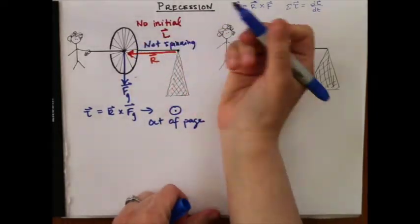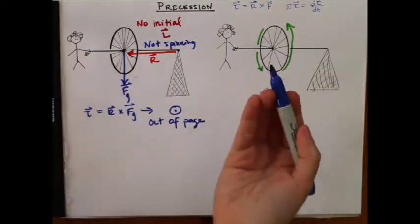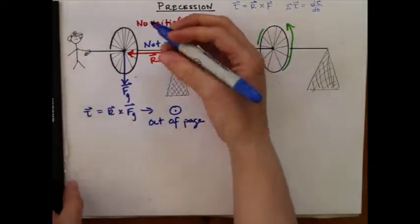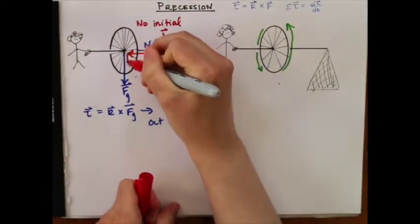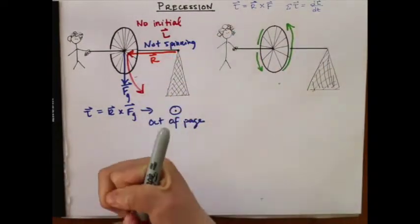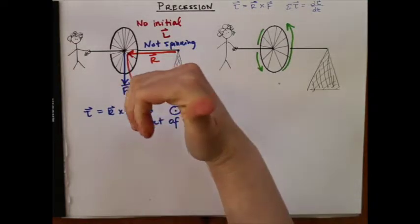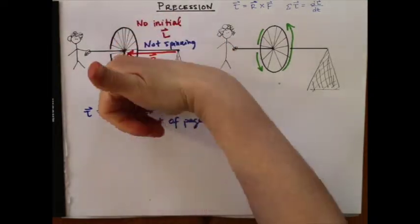And that causes the wheel to do what? Well, what would happen if you let go of the end? It would just fall over, right? So it would just go flump, which makes sense because if the torque is out of the page, that means the thing has to rotate this way.